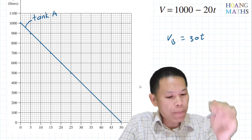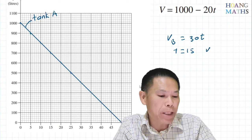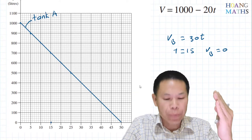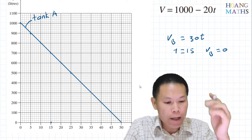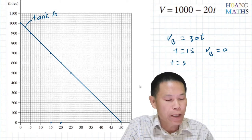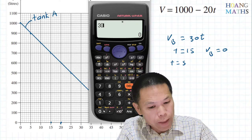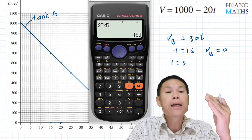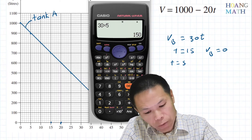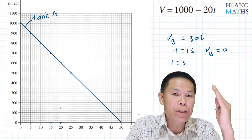Tank B starts at t = 15 minutes, so when t = 15 the volume is still zero. Five minutes later, at t = 20, we calculate 30 × 5 = 150. But 150 is hard to read accurately on the graph, so it's better to choose every 10 minutes instead.